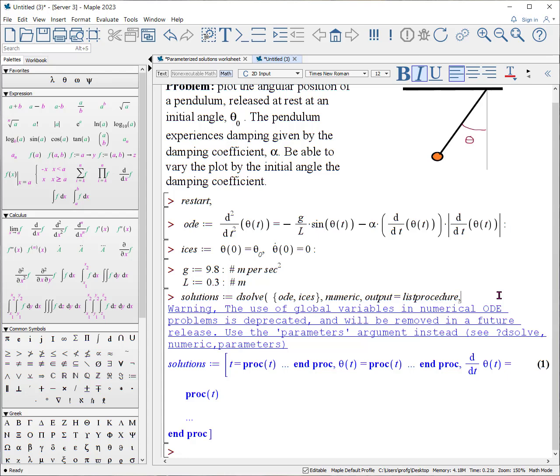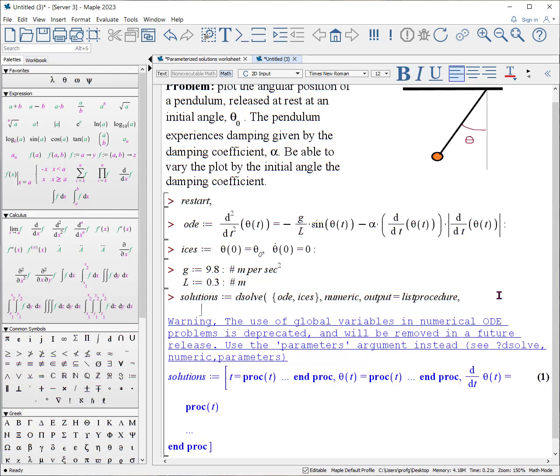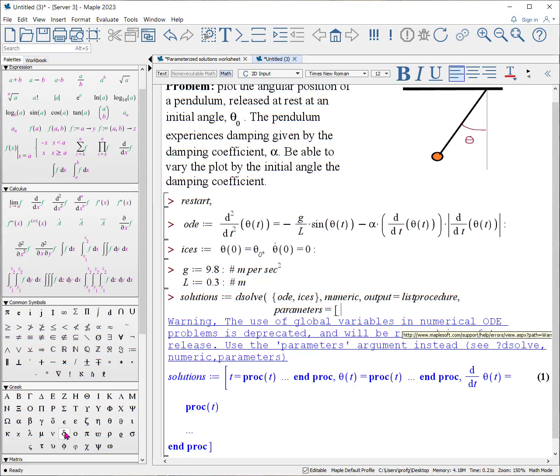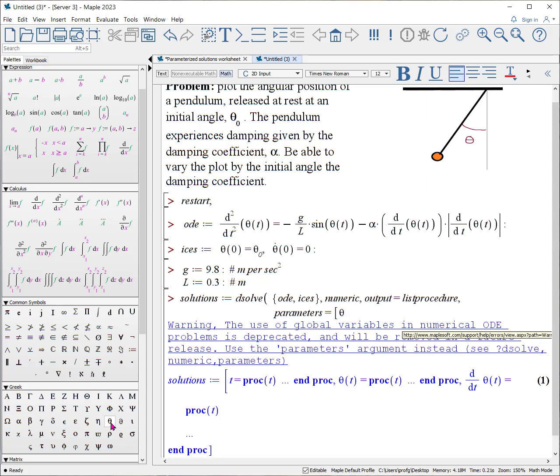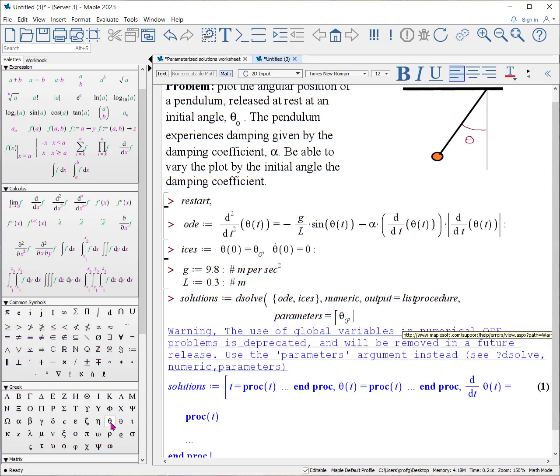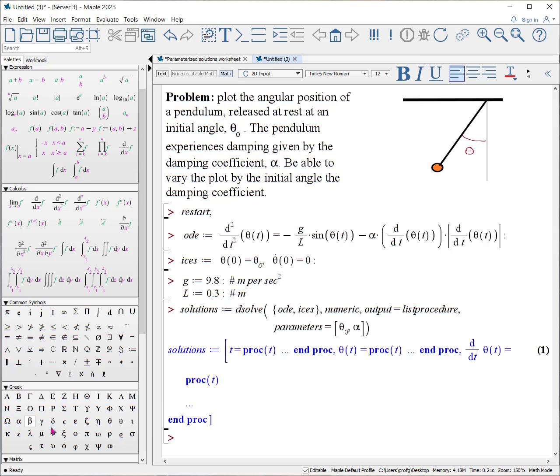Now what we're going to do is put a comma here, shift enter, and say parameters equals. Now we're going to give it a list of parameters and we'll make that list of parameters first: θ₀, comma, and the α character. So those are the two parameters. End square of the list, close the parentheses, and now when we hit enter it actually returns all those procedures.